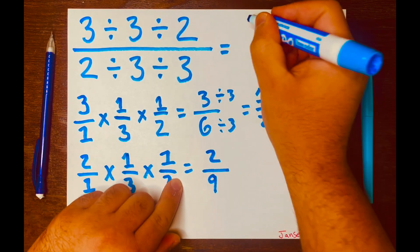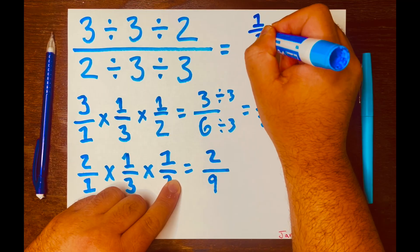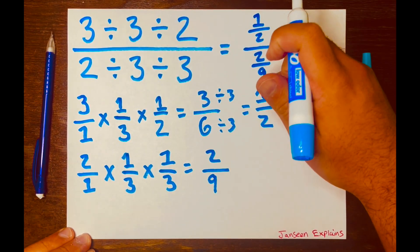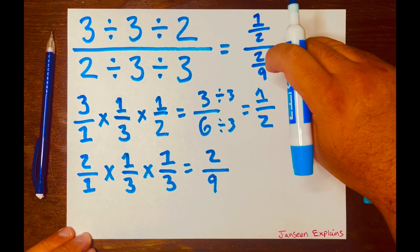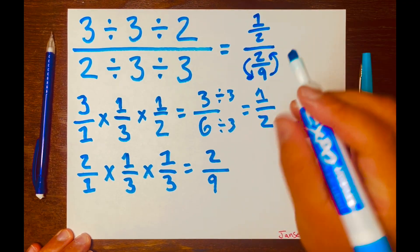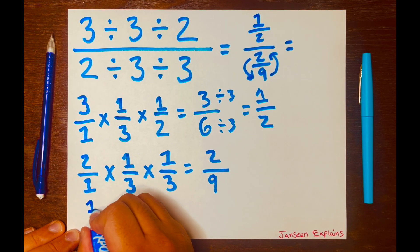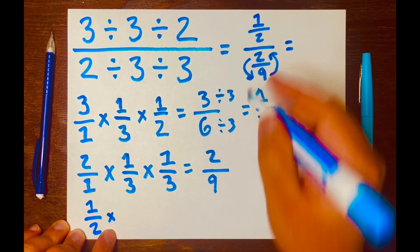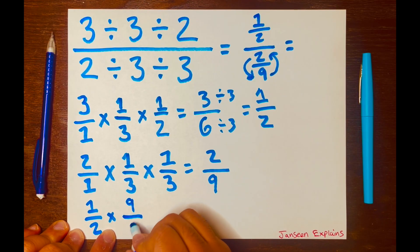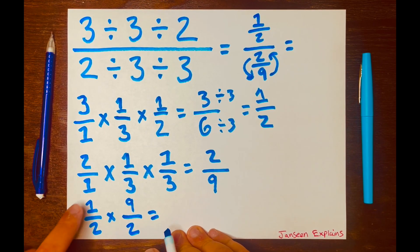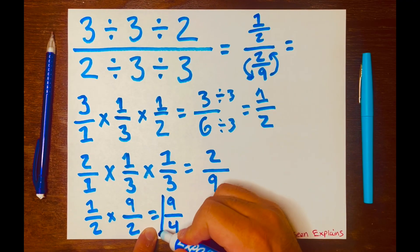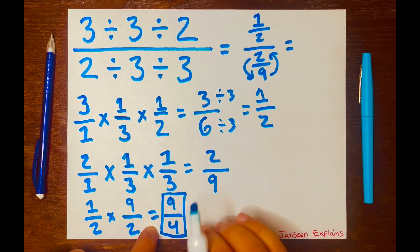Now we'll just write one over two divided by two over nine. All you have to do is keep-change-flip. We'll keep one over two, change the division line to multiplication, and then flip this fraction — so nine will go on top and two will go on the bottom. So it's one over two times nine over two. Multiply across: one times nine is nine, two times two is four. You cannot simplify this further, so your answer is nine over four.